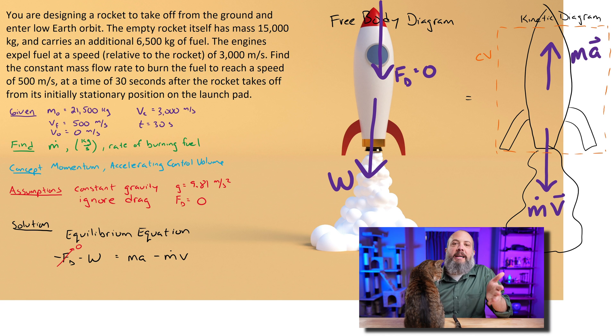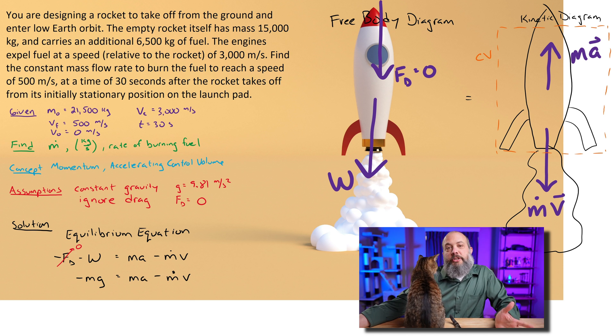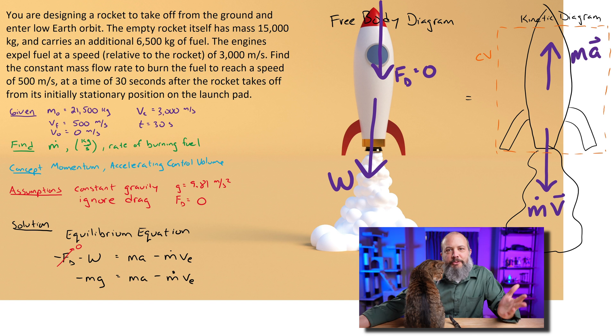And for my m dot v, the m dot term is positive because the mass is leaving the control volume, and the velocity term is negative because it's pointed downwards. So m dot v ends up being negative. So cross off drag because I ignored that, assumed it was zero.